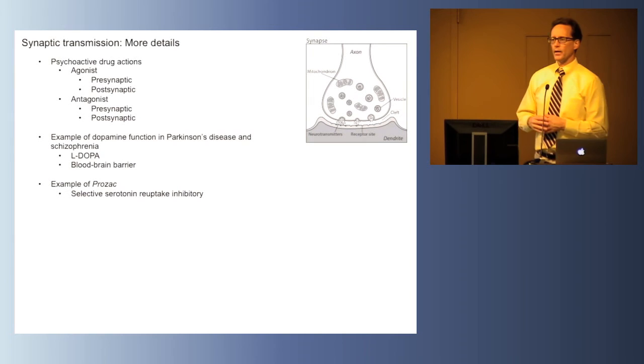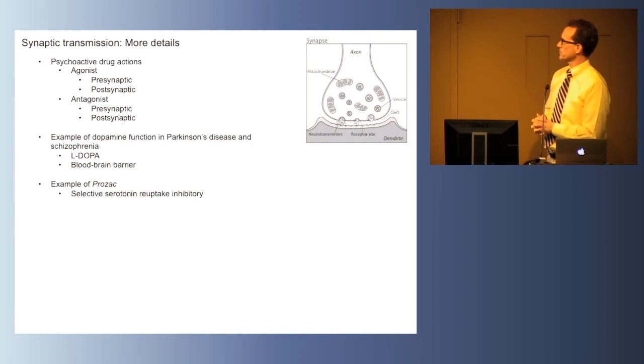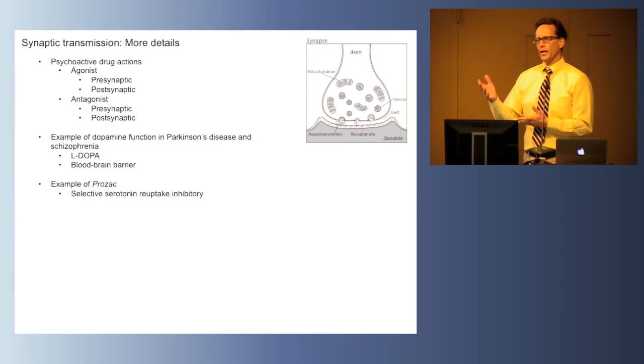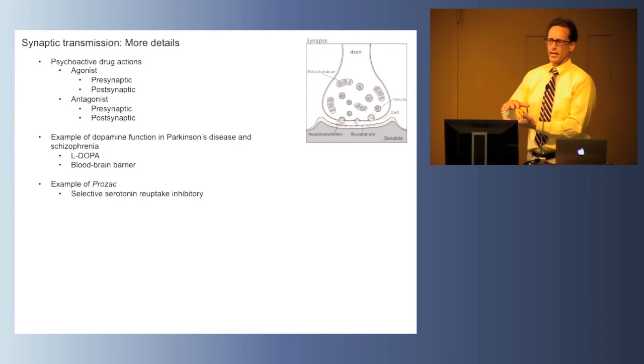The drug Prozac operates at one of the reuptake mechanisms for serotonin. There's a particular protein molecule in the presynaptic membrane known as a serotonin reuptake mechanism, and Prozac inhibits the reuptake of the serotonin. By blocking the reuptake, Prozac keeps more serotonin in the synaptic cleft longer, allowing it to influence the postsynaptic neuron for a longer period of time.